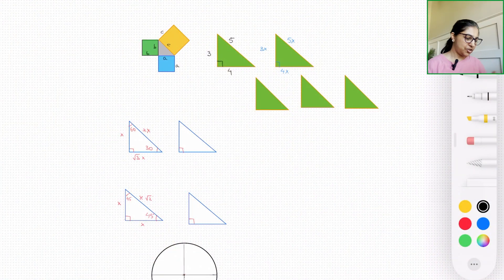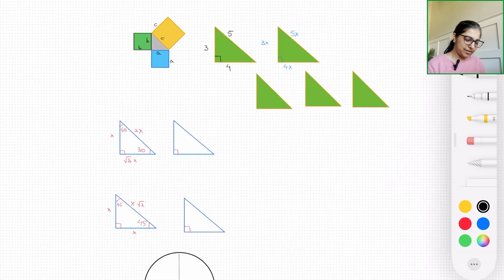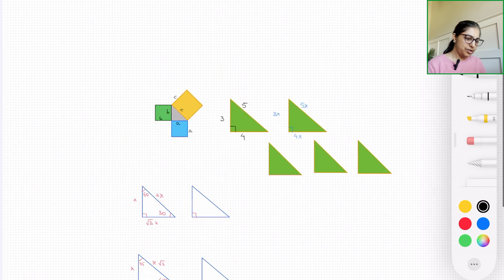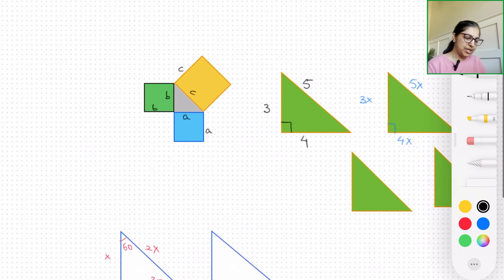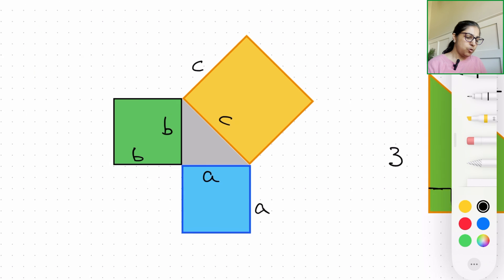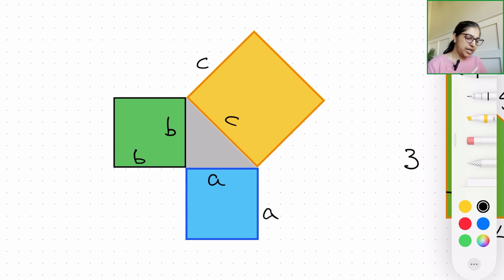All right, let's go ahead and get started. On the screen is the entire thing about these special right triangles that we're going to learn today, and let me just zoom piece by piece so we can go over them one at a time. So here, what you see on the screen is actually how the Pythagorean theorem came into being.